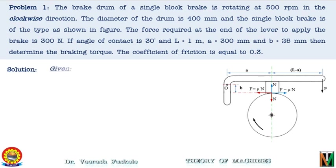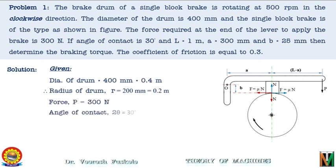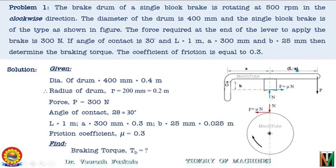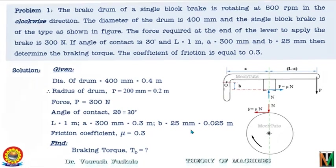Let's write what is given: diameter of drum = 0.4 m, so radius r = 0.2 m; applied force P = 300 N; angle of contact = 30°, which is less than 60°; lever length L = 1 m; A = 300 mm = 0.3 m (distance from block center to fulcrum); B = 25 mm = 0.025 m (distance from fulcrum to line of action of friction force); coefficient of friction μ = 0.3. We need to find braking torque T_b.